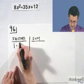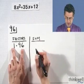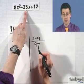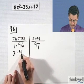So let's factor 96. So the first easiest one is 1 times 96. And if I add the two factors together, their sum is actually 97. That's a far cry from the 35 that I seek.